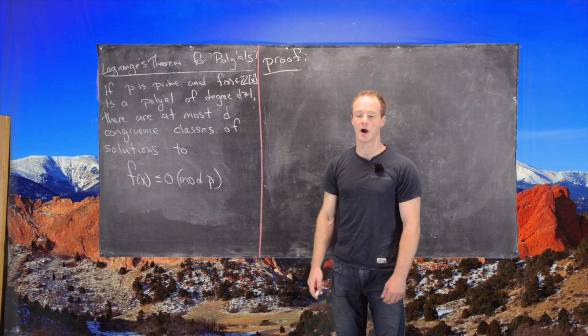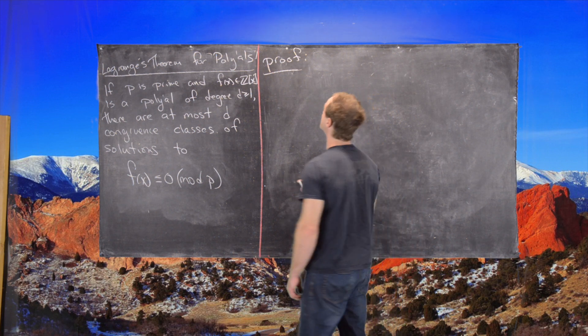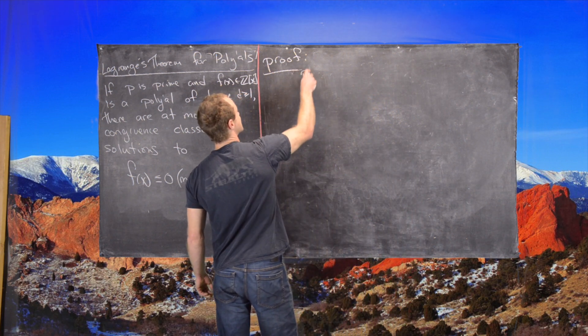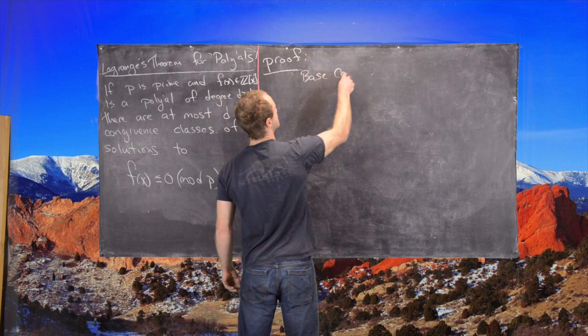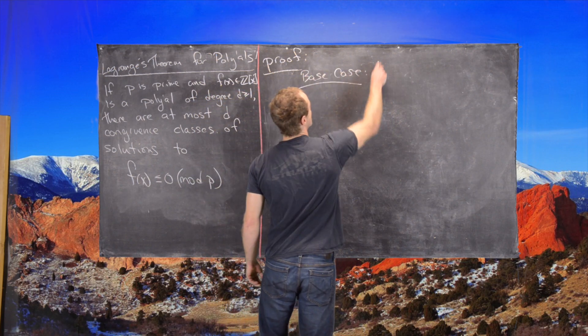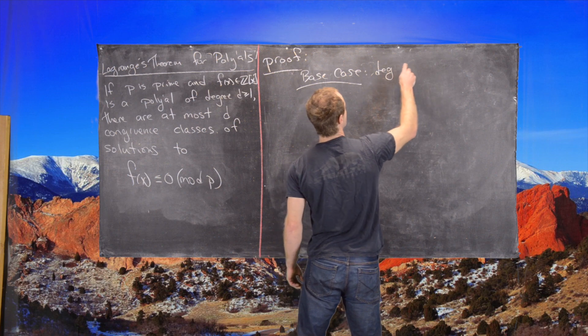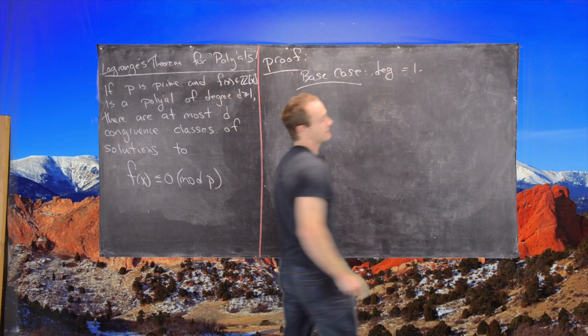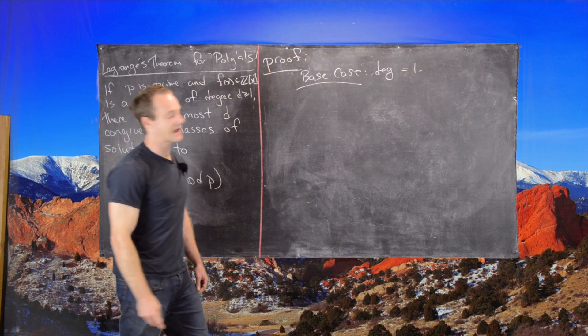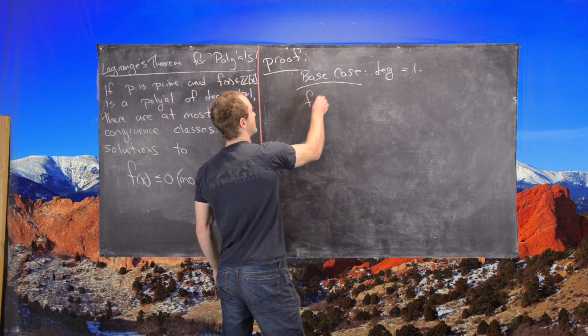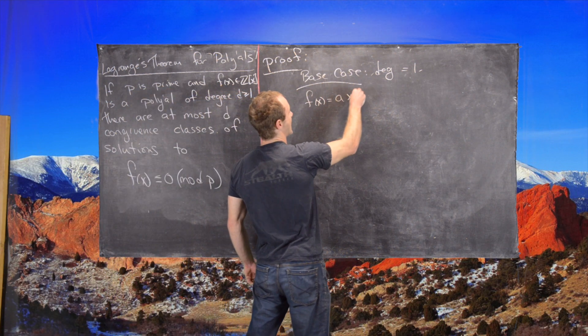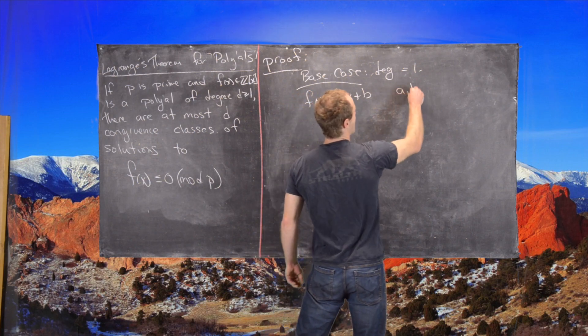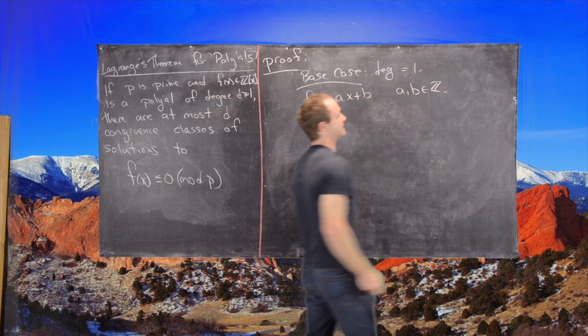The proof will go by induction. Let's make our base case for the degree of the polynomial equals 1. In that case, we have our polynomial must be of the form AX plus B, where A and B are integers.